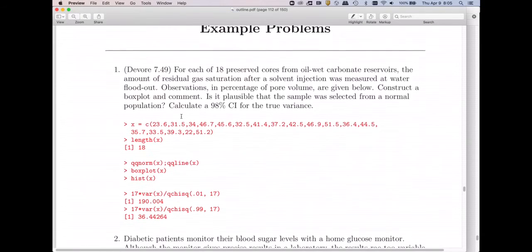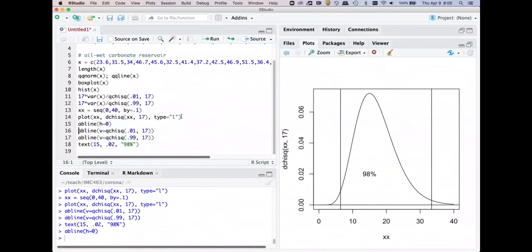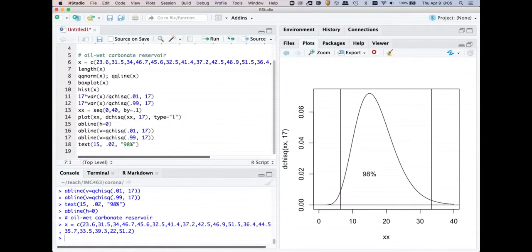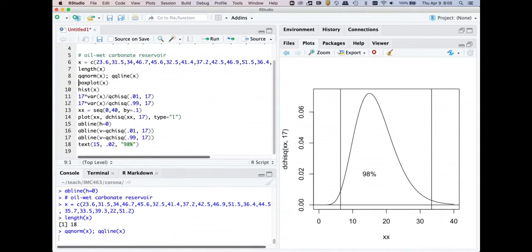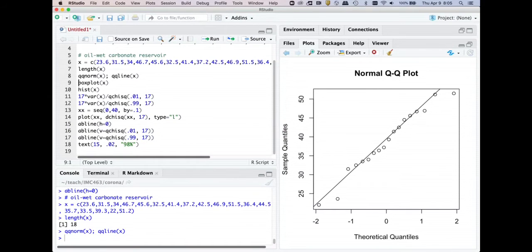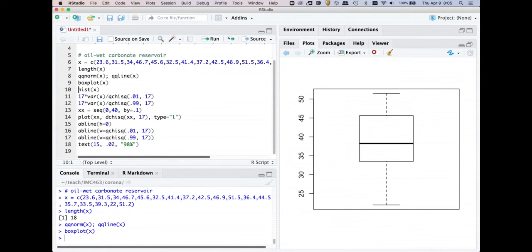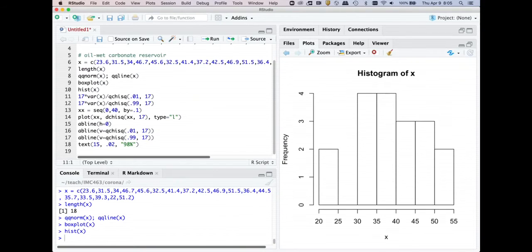Now, let's go over to R for a second. And I've typed in the data. So you'll see that we've got 18 values, just as the problem stated. And I'm going to generate a Q-Q plot with a line superimposed. And so this looks fairly normal. No major departures from normality. So I'm not going to worry about normality. Box plot looks fairly normal. Histogram looks reasonably normal as well.